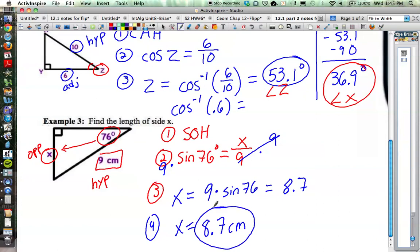Our answer for X is about 8.7 centimeters. So we're sort of speeding up our process now. Instead of punching it in and getting the decimal for it, we're just going right from the sine of 76, just leaving it as sine of 76 until the very end of the problem, punching in 9 times sine of 76, and you get about 8.7.